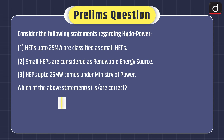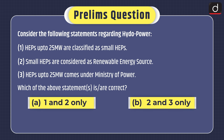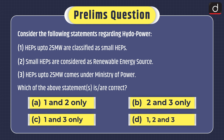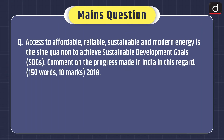Now it's time for the practice questions. Prelims question: Consider the following statements regarding hydropower. 1. HEPs up to 25 MW are classified as small HEPs. 2. Small HEPs are considered a renewable energy source. 3. HEPs up to 25 MW come under the Ministry of Power. Which of the above statements is or are correct? (a) 1 and 2 only, (b) 2 and 3 only, (c) 1 and 3 only, or (d) 1, 2 and 3. Mains question: Access to affordable, reliable, sustainable, and modern energy is the sine qua non to achieve Sustainable Development Goals. Comment on the progress made in India in this regard. That's all for today. Stay tuned for the next episode. Thanks for watching.